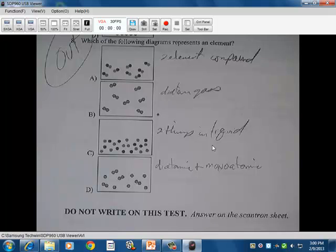In B, you have a diatomic gas. You have the two elements put together. Fluorine, chlorine, etc. C, you have two things in a liquid. They happen to be separate from one another. Like, if you have any two things that are in a liquid.